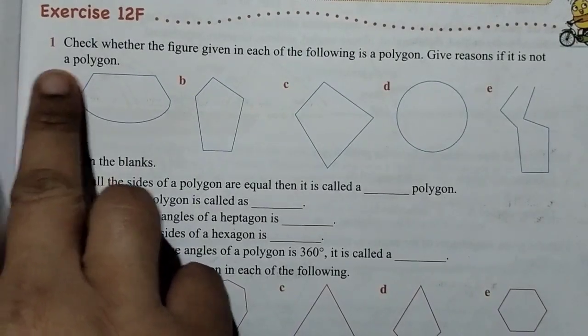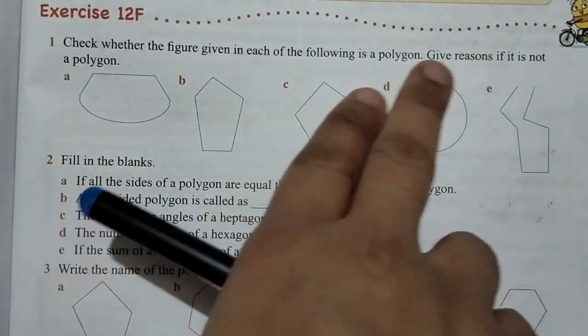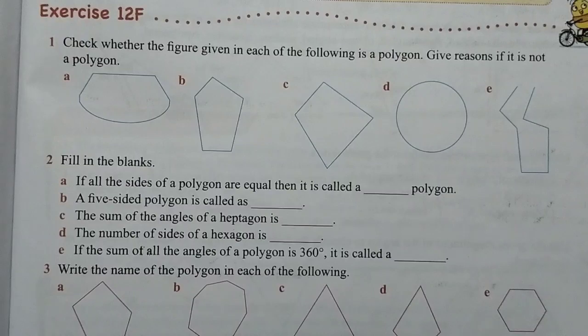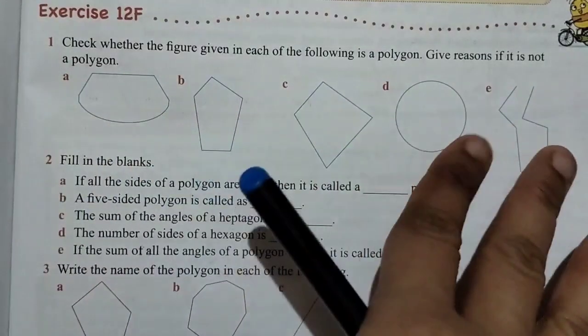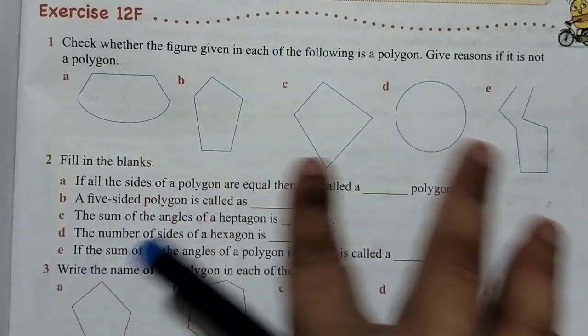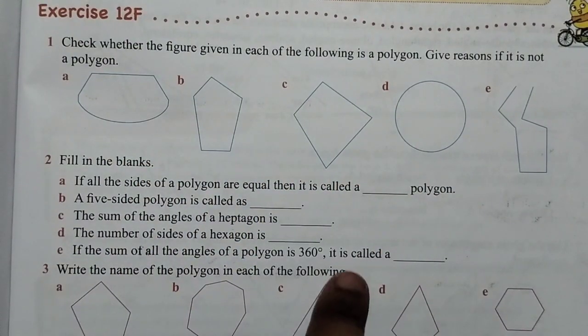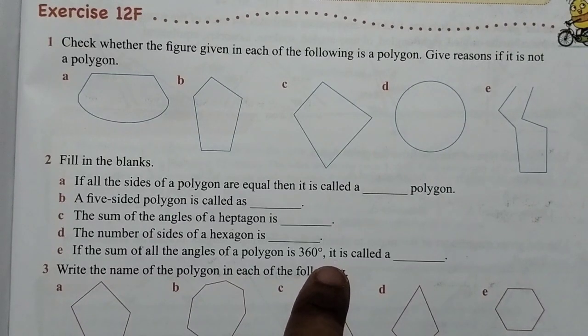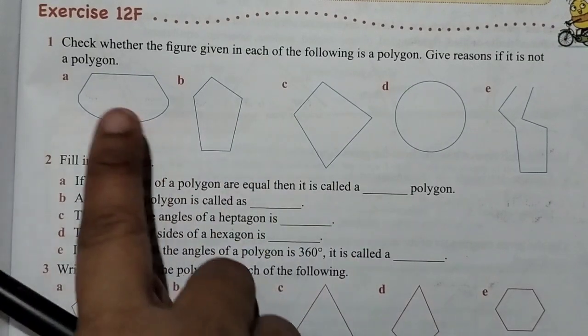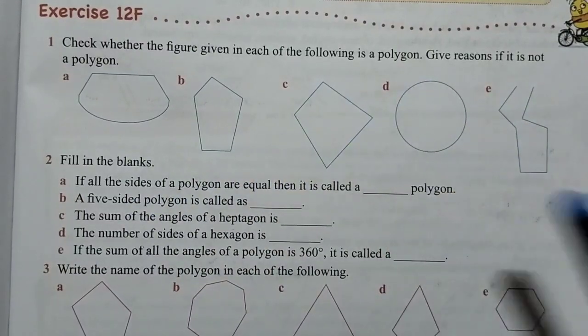Question number 1: Check whether the figure given in each of the following is a polygon. Give reasons if it is not a polygon. This is the figure polygon. This is the straight lines and it is not bisect. This one, this one, and this one - this is not the polygon.